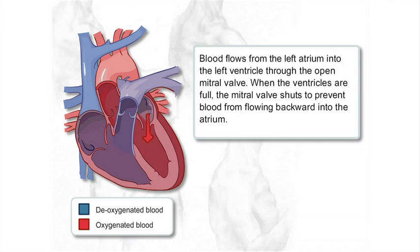Blood flows from the left atrium into the left ventricle through the open mitral valve. When the ventricles are full, the mitral valve shuts to prevent blood from flowing backward into the atrium.